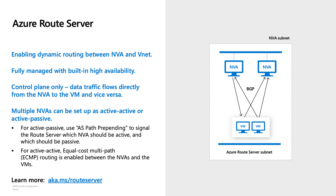Route Server is also a control-plane-only service, meaning it does not forward data. All data forwarding happens between your NVA and your VMs, so Route Server will never be a bottleneck. Route Server relies on BGP as a standard routing protocol, so you can use BGP attributes to configure your NVAs as active-active or active-passive. For more information, please go to aka.ms/RouteServer.